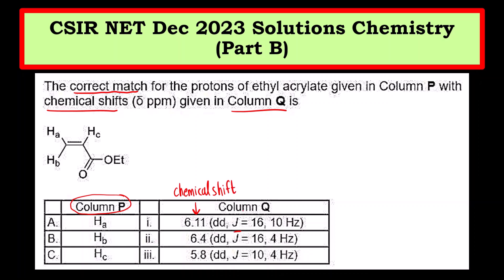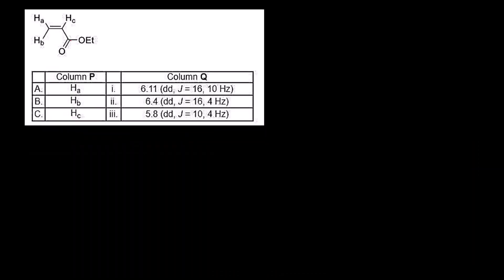What is J? J is coupling constant, and this is the frequency. What we have to do is the first thing that we can do is the most easiest part you can do is to predict the value of chemical shift.